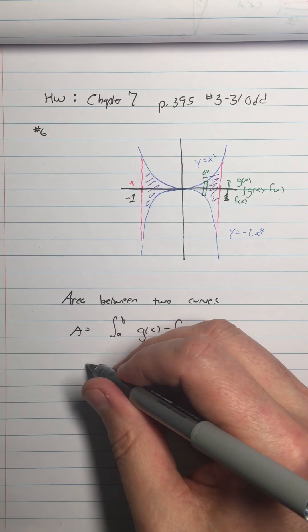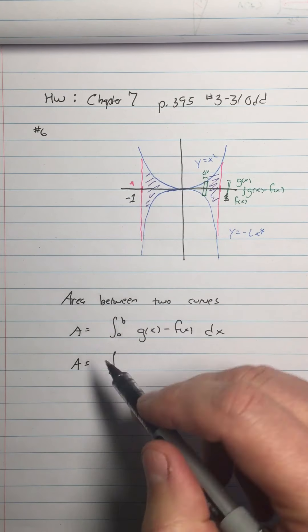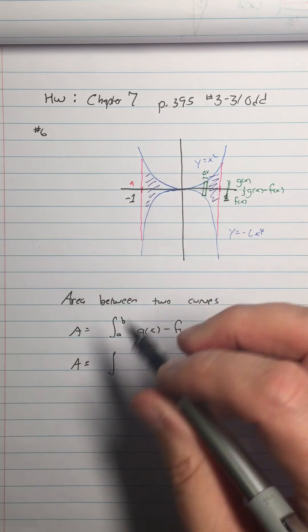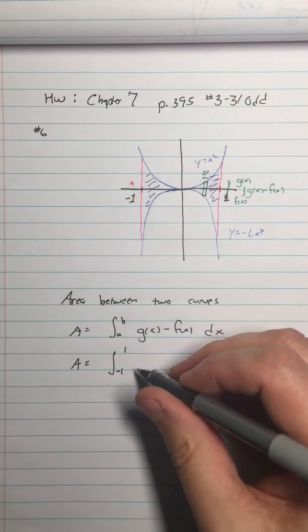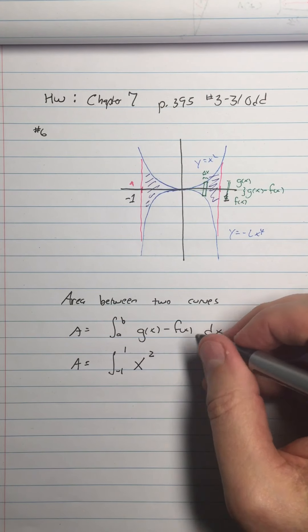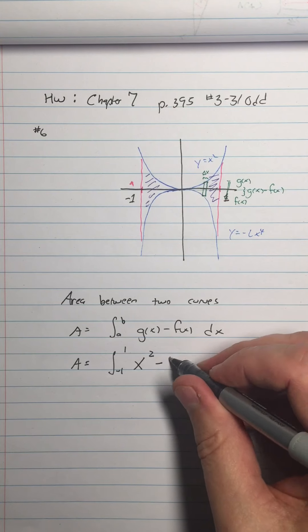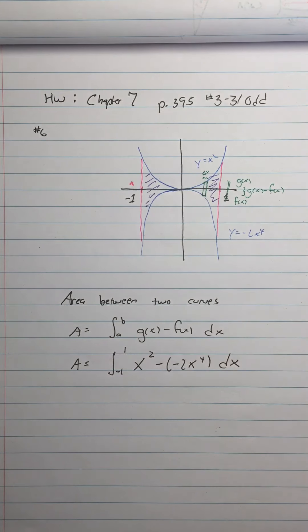Alright, well, let's just go ahead and set it up. So this area, our particular area for number six, is going to be the integral from... So the limits are, where does the figure begin and end? We're going from negative 1 to 1, negative 1 to 1. g of x is the top function, and f of x is the bottom function, which is negative, so I'm going to be going x squared minus negative 2x to the fourth dx. Alright, so that's my integral that I need to do, and I'm going to say something else about that.